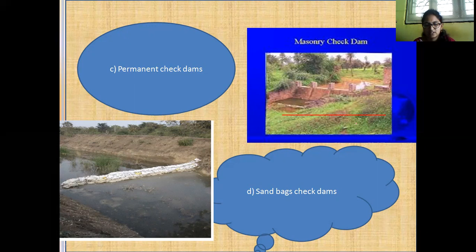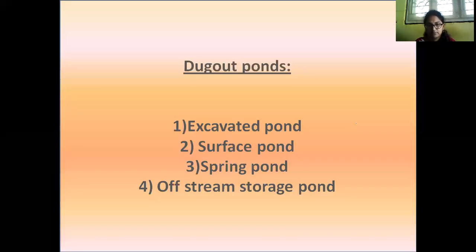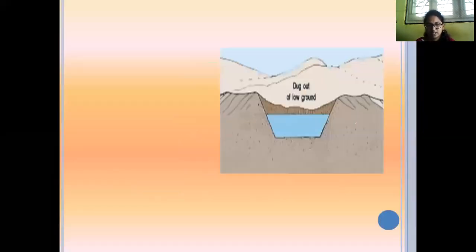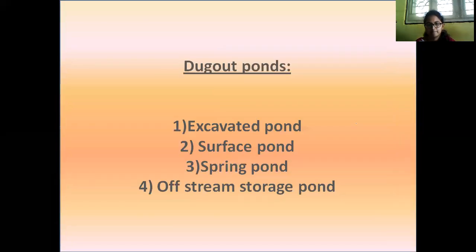Another type is dugout ponds. What are dugout ponds? The types include excavated pond, surface pond, spring pond and off-stream storage pond.